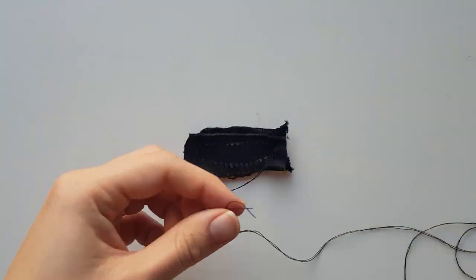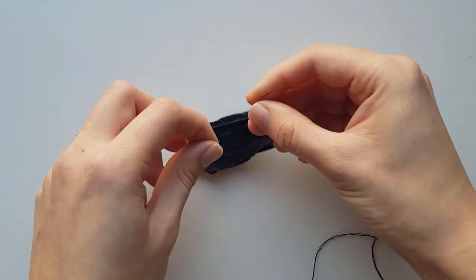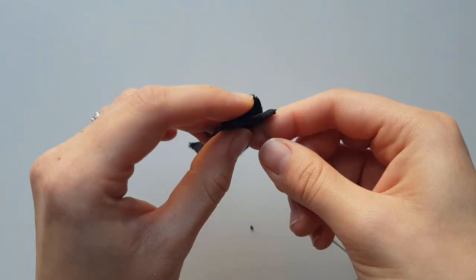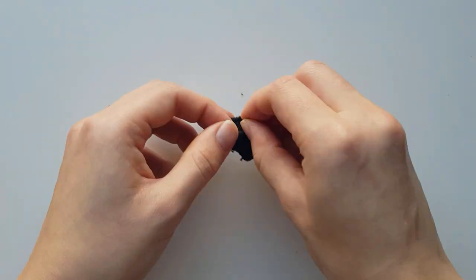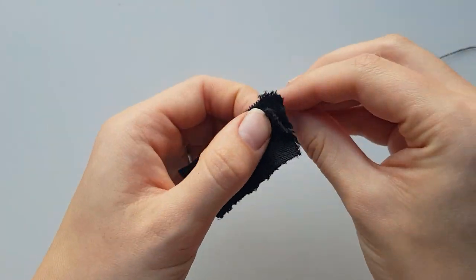Place two shoe tips together wrong side up and sew them together along the shortest-width sides. Do the same with the remaining two pieces.